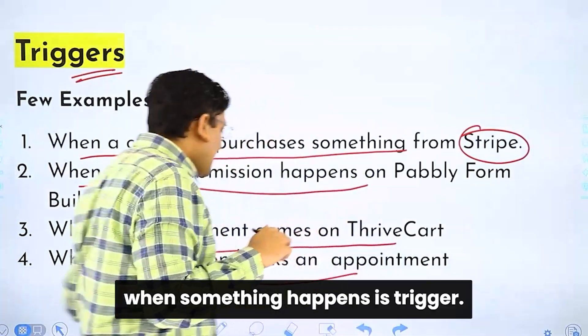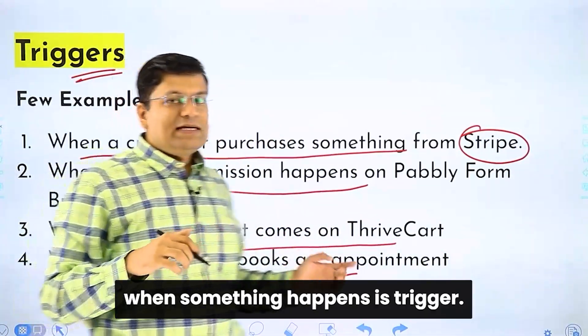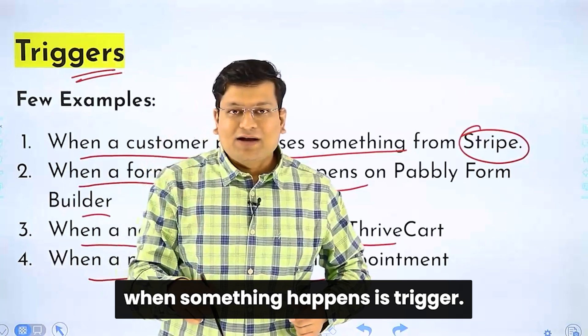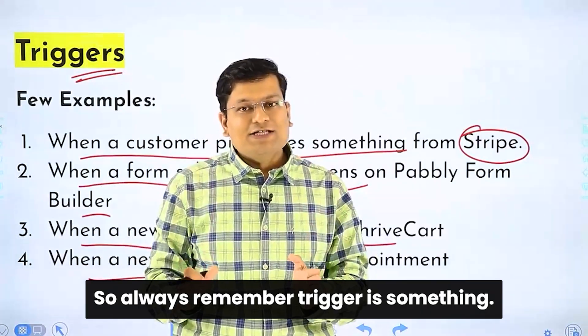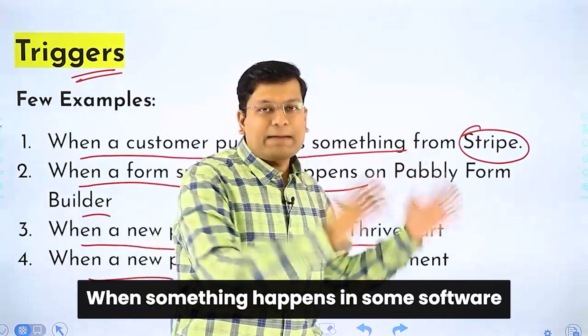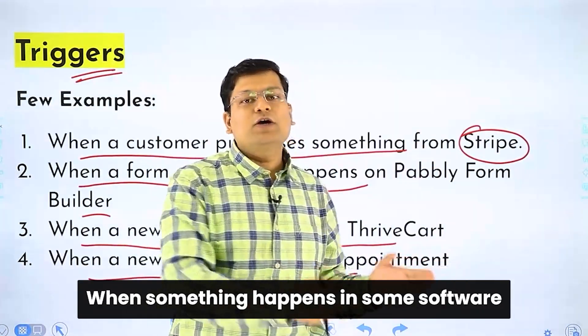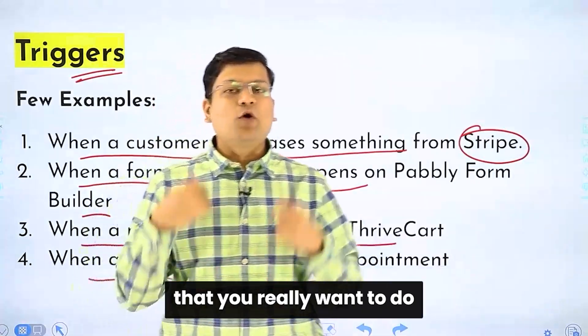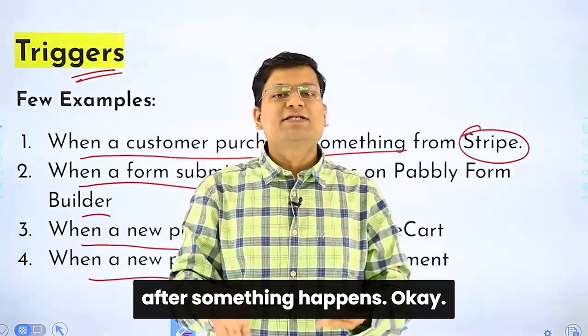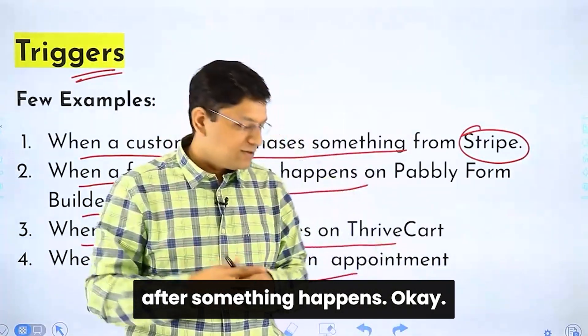Always remember: a trigger is something that happens in some software. An action is something you really want to do after something happens.